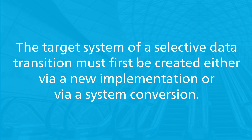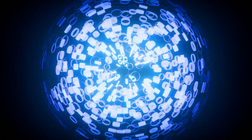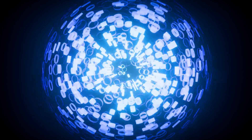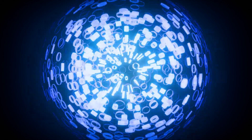Data from one or more SAP ERP systems is transferred to the SAP S/4HANA target system. The target system of a Selective Data Transition must first be created either via a new implementation or via a system conversion. The data is then selected, converted to the SAP S/4HANA data model, and loaded into the target system.